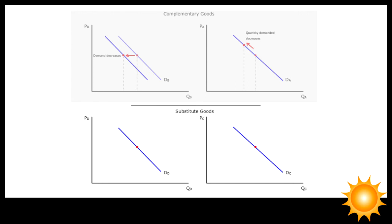On the lower panels, we have two substitute goods C and D. Suppose the price of good C goes down on the right panel. The law of demand tells us that more of good C will be purchased by moving down the demand curve. In other words, the quantity demanded for good C will increase.